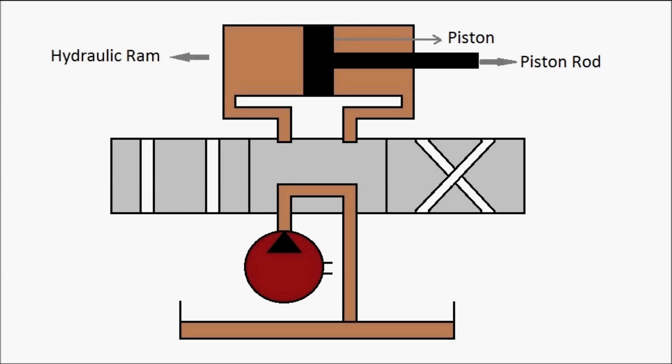You can also see the piston and the piston rod marked over there. That's the head side of the hydraulic ram. It is called the head side because the head side of the piston is coming at that section, and the area of the cylinder at that position will be more when the piston is at center. Compared to the rod side — you can see the rod side there — that's where the piston rod supporting the piston is coming, so the area will be less at that part of the hydraulic ram.